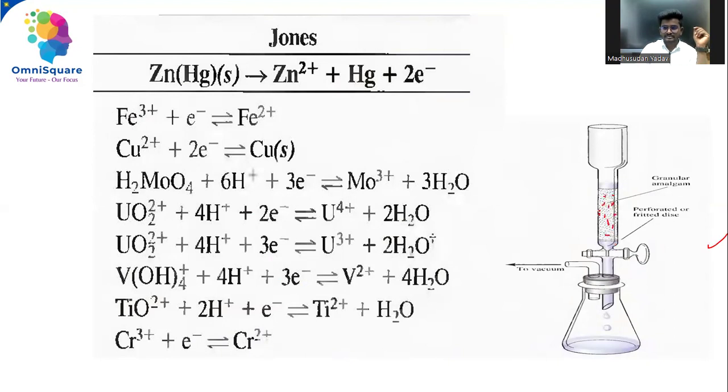This is granules of your amalgamated zinc, zinc amalgam, where it will reduce the metal ions. Look at this: zinc amalgam, when it is undergoing dissociation, will be converting into zinc plus two and mercury neutral, and two electrons. These electrons, if they are accepted by any metal ions, reduction is taking place.